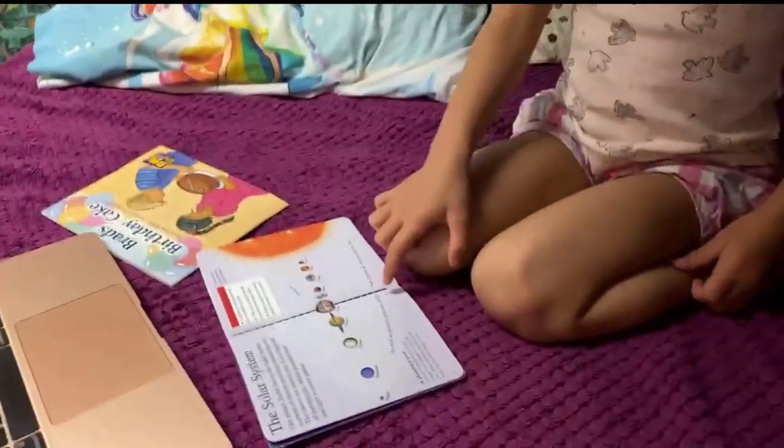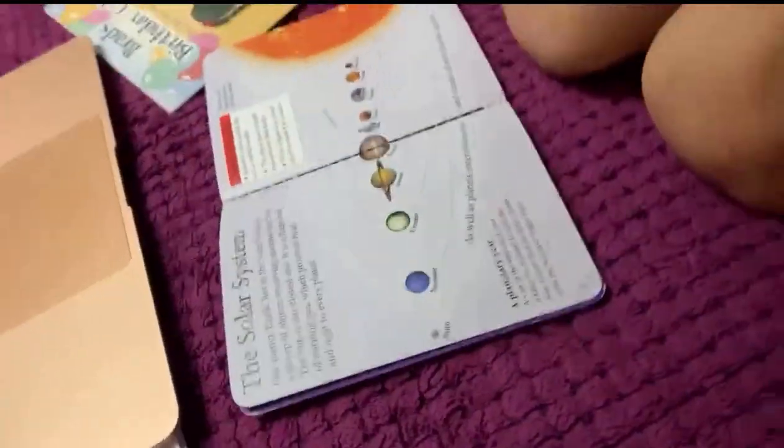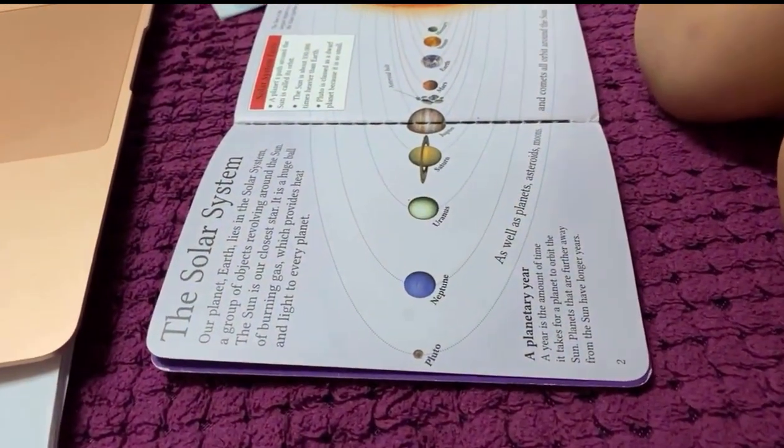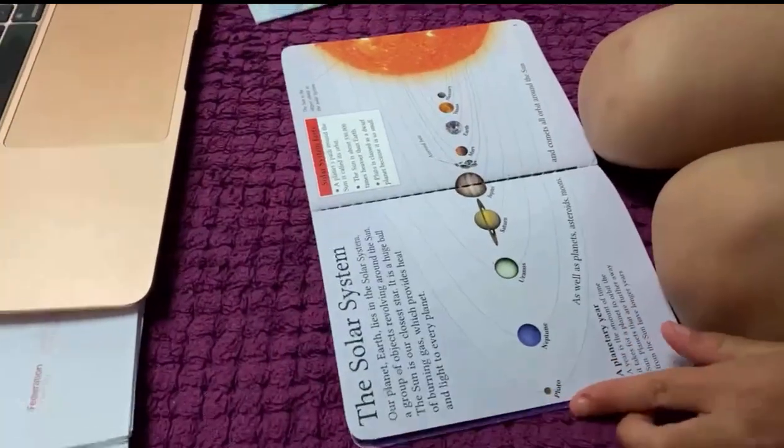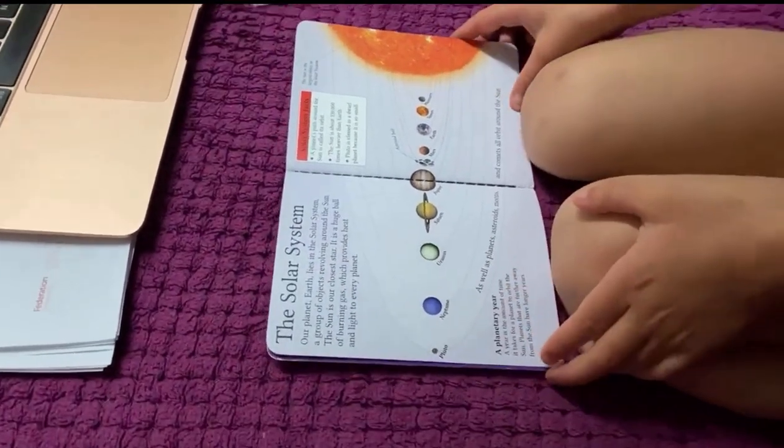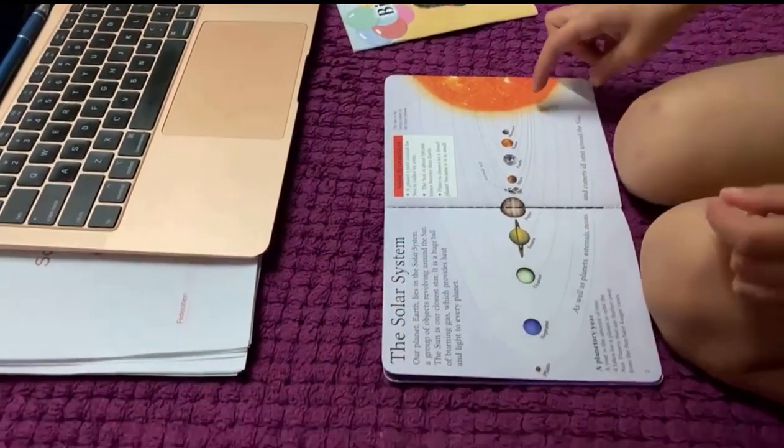There were eight, there are nine planets in the solar system, but one isn't a planet anymore, which is Pluto. All the other planets, there are now eight planets, and all of those eight planets are called mercury, venus, earth, mars, jupiter, saturn, uranus, and neptune.